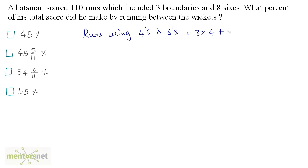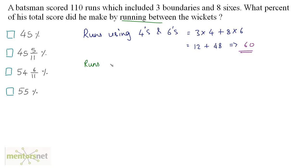...plus eight sixes, so eight times six. This equals 12 plus 48, which equals 60. So 60 runs were made using boundaries and sixes. The rest were made by running between the wickets: 110 minus 60 equals 50 runs scored by running between the wickets.